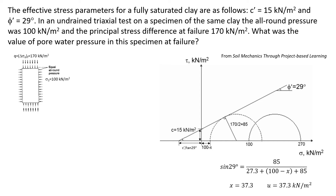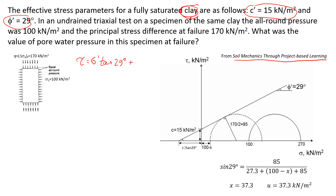This video will explain how to analyze data from undrained triaxial tests on clay. I took this example from my book called Soil Mechanics for Project Based Learning. In this example, we have a clay with an undrained friction angle of 29 degrees and cohesion of 15 kilonewtons per square meter. These are effective stress conditions, so the shear stress is equal to normal stress times tangent of 29 degrees plus cohesion of 15.